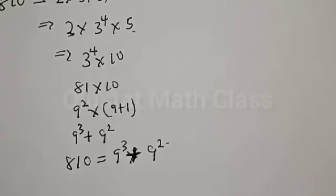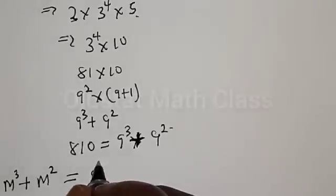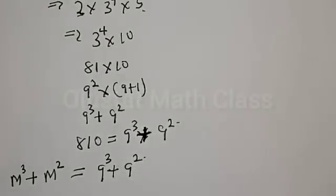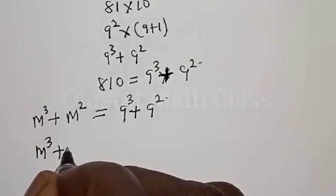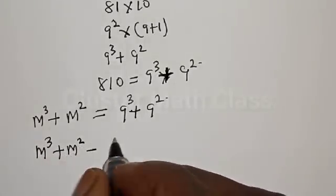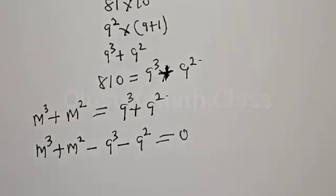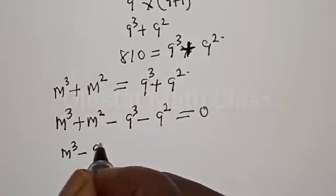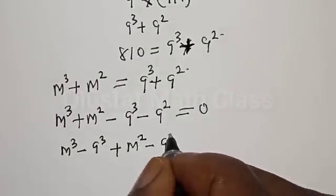Now let's substitute back into the main equation. We have m³ + m² equal to 9³ + 9². Let's rearrange and equate to zero: m³ + m² minus 9³ minus 9² equals zero. This can be rearranged as (m³ minus 9³) plus (m² minus 9²) equals zero.